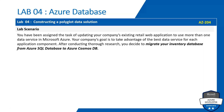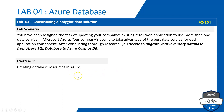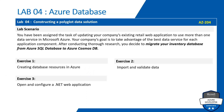We are going to complete Lab 4 in six exercises because it's a bit long. In Exercise 1 we'll create all the resources required for this lab. In Exercise 2 we'll import data from the Git repository, upload it into cloud storage, load it into the SQL database and Cosmos DB, and validate the data.